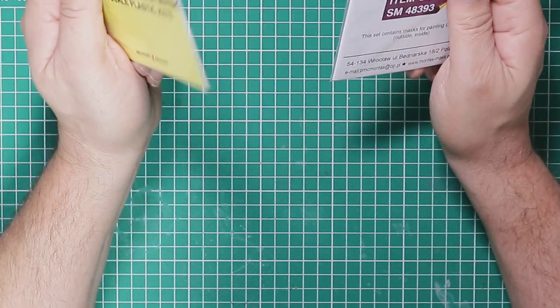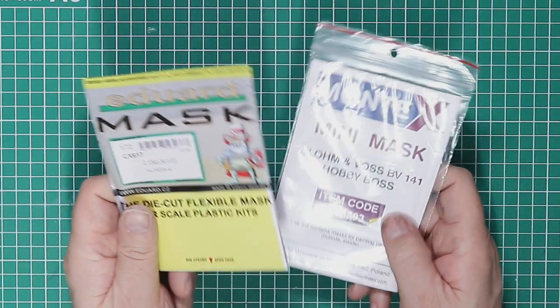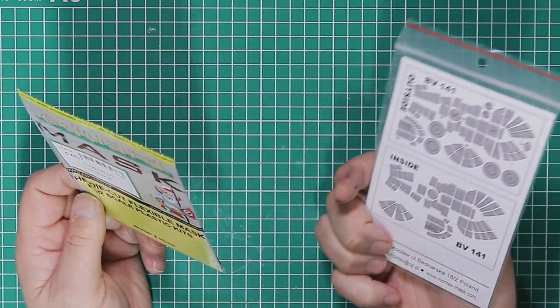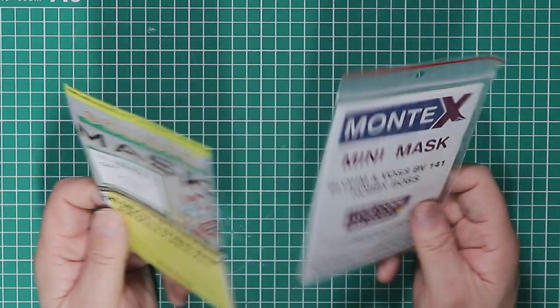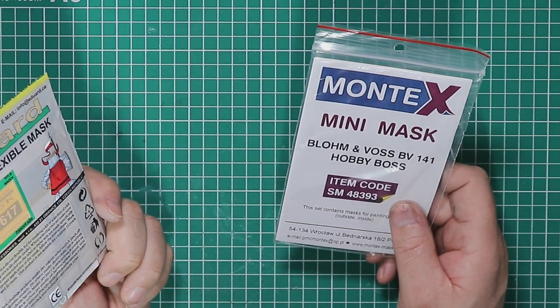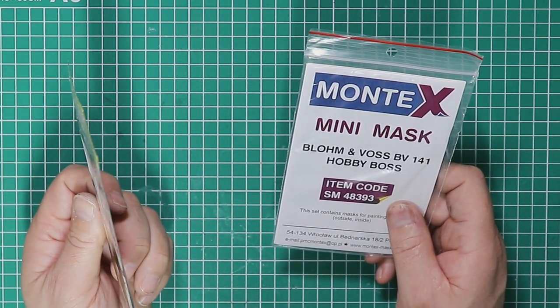In which case, canopy masks such as the ones by Eduard, the yellow Tamiya tape ones, or Montex which are vinyl are a lifesaver. They can be quite expensive but the amount of time they save and your eyesight, it's probably worth the weight in gold.